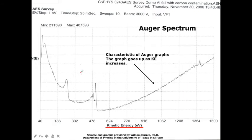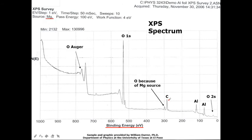If we want to understand an auger spectrum, we analyze it based on kinetic energy. Auger spectrum graphs are always broader graphs — these are the characteristics of auger graphs. The graph increases as kinetic energy increases. In contrast, in the XPS spectrum we are trying to understand the binding energy.